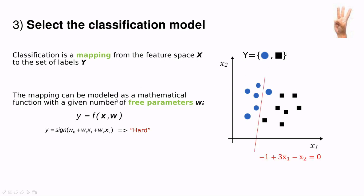So let's try a couple of possibilities. What if w0 is minus one, w1 is three and w2 is minus one? Then we have this straight line. This is a sign function. So everything above this line is blue and everything below this line should be black. This line is not doing very well and actually this is not the best choice of parameters.